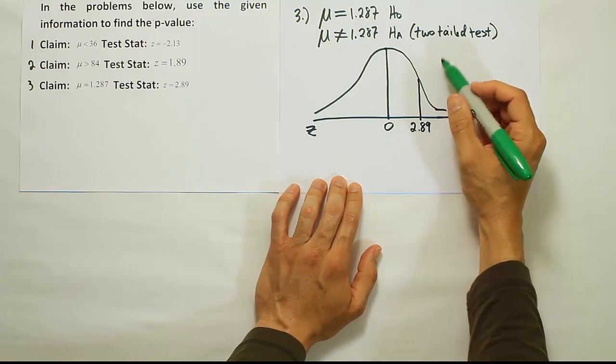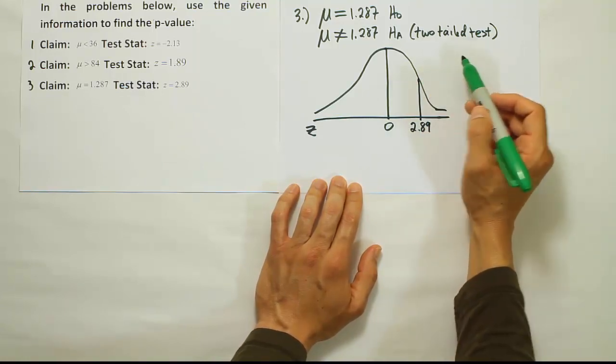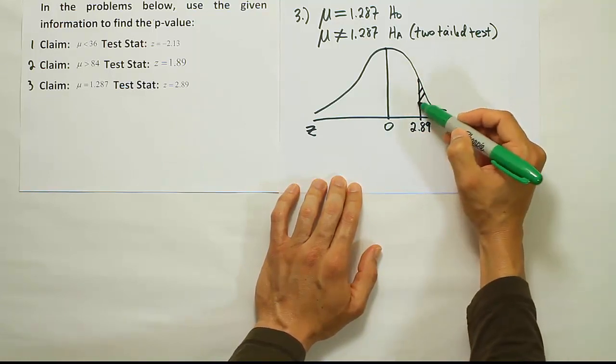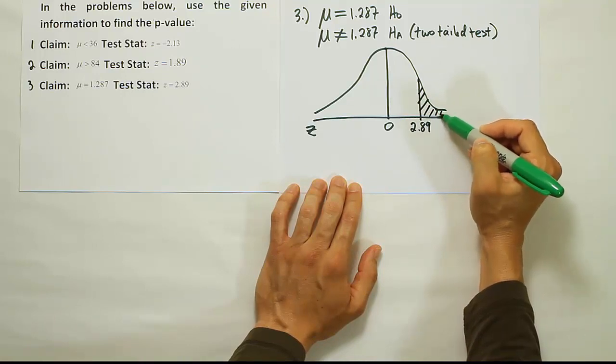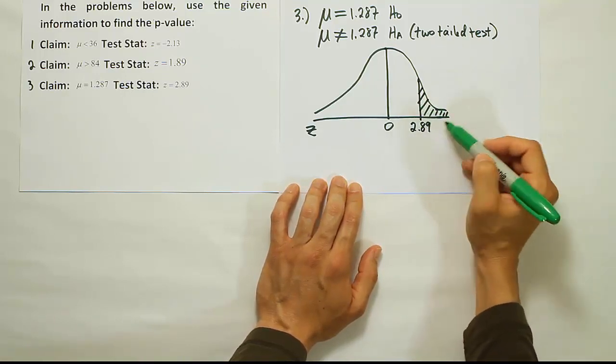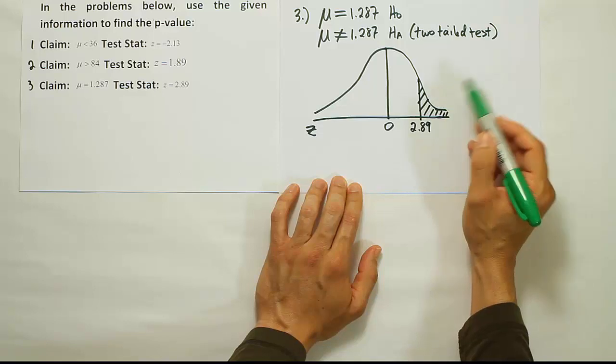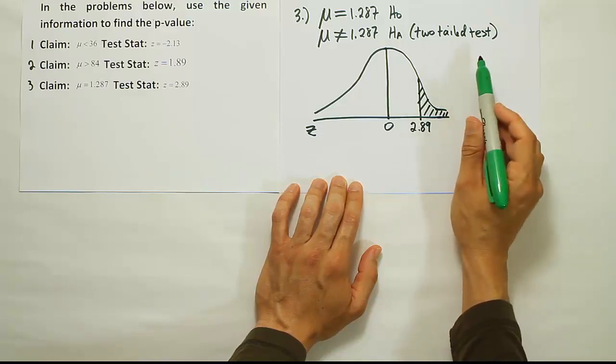And then, because it's a two-tailed test, the rule is this. We find the tail area beyond the test stat. The tail, in this case, is on the right-hand side. So we're looking for this tail area, and then we double it because it's a two-tailed test.